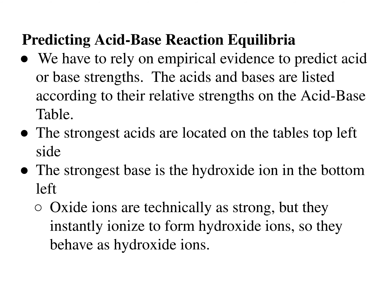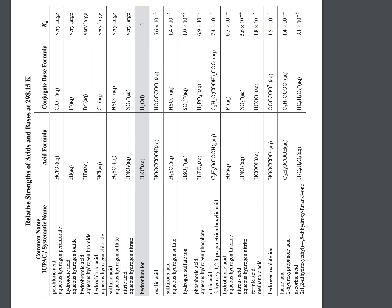We rely on empirical evidence in order to predict acid or base strength. Scientists have tested how strong and weak acids and bases are relative to each other, much like they've tested the relative strengths of oxidizing and reducing agents. These strengths are listed in the acid-base table in our data books.